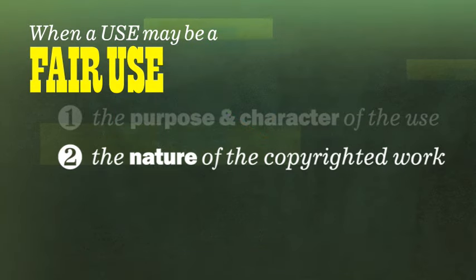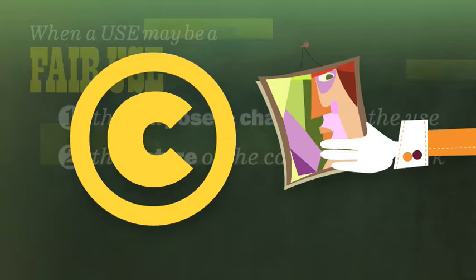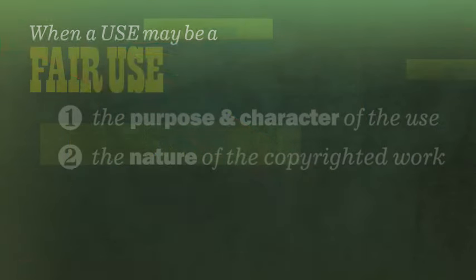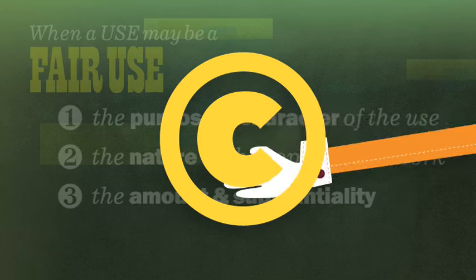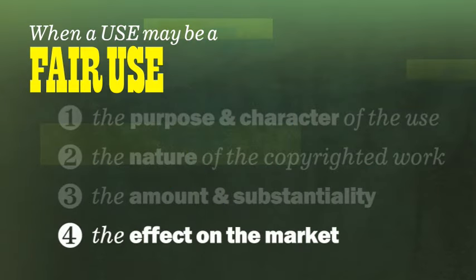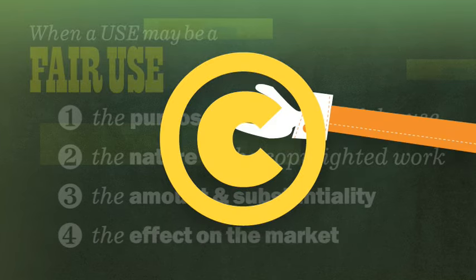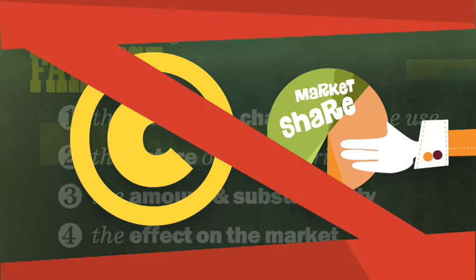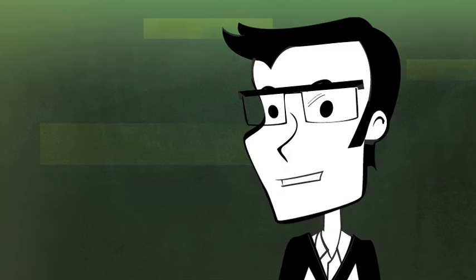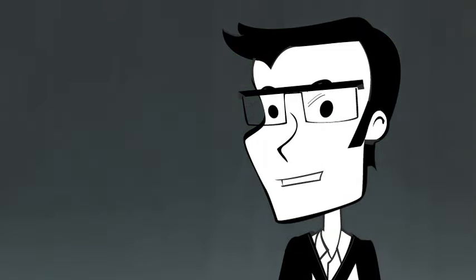Next is the nature of the copyrighted work. The use of a purely factual work is more likely to be considered fair use than the use of a creative work. Third, an evaluation of the amount and substantiality considers how much of the work was used — even a small portion may be too much if what is used is the heart of the work. And finally, fair use considers the effect of the use on the market or the potential market. If your use is likely to result in an economic loss to the copyright holder, then it is less likely to be considered fair use. None of these factors alone is enough; you have to weigh all four to determine if the use is really fair use.